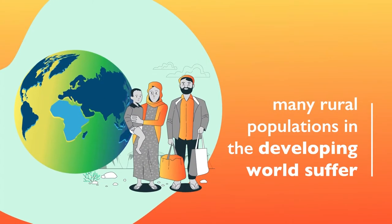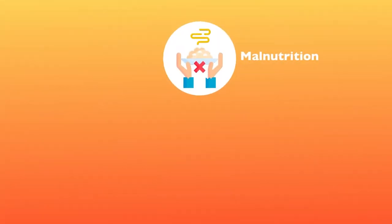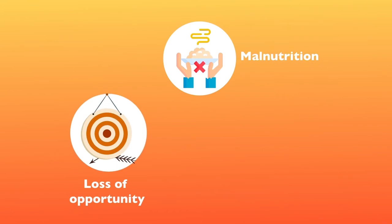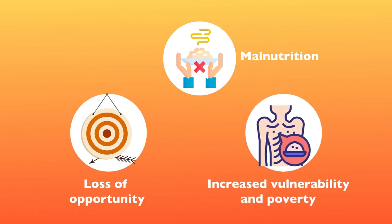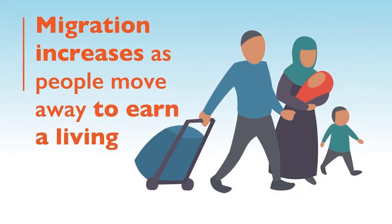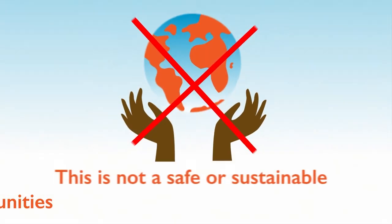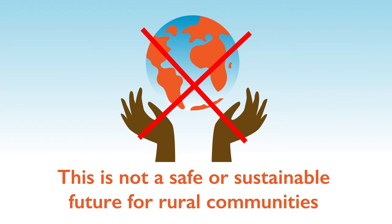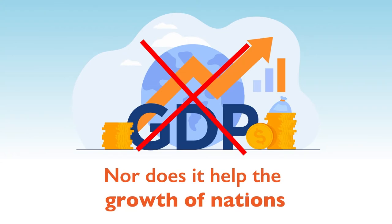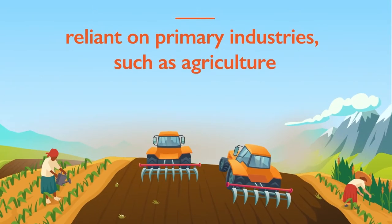As a result, many rural populations in the developing world suffer from malnutrition, loss of opportunity, increased vulnerability, and poverty. Migration increases as people move away to find a living elsewhere, which can also lead to family fragmentation and increased potential for conflict. This is not a safe or sustainable future for rural communities, nor does it help the growth of nations reliant on primary industries such as agriculture.